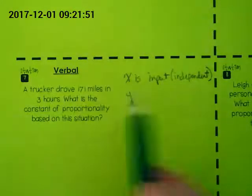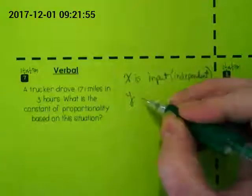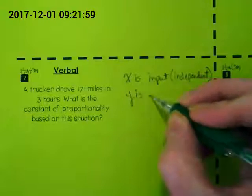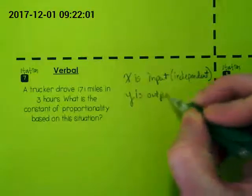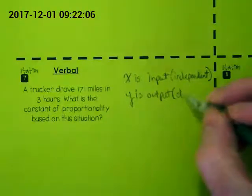So again, we're looking at what is our X and what is our Y. Y is our input - I'm sorry, X is our input and independent. Y then is our output, and what do you think this is? Dependent. Dependent.